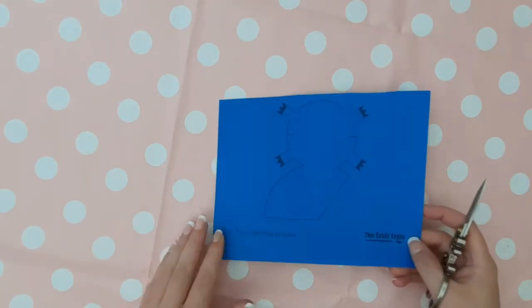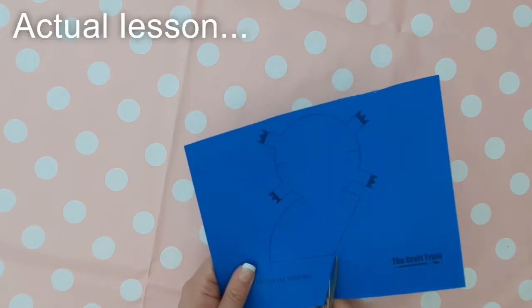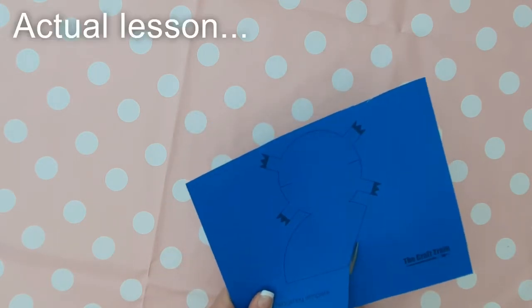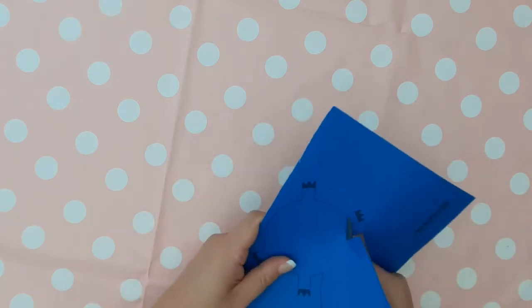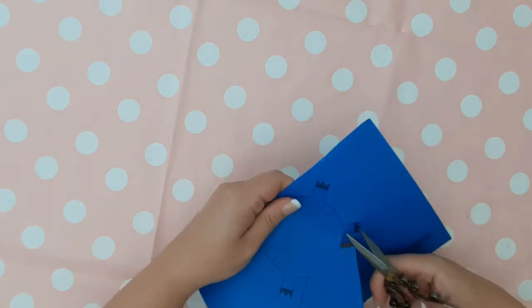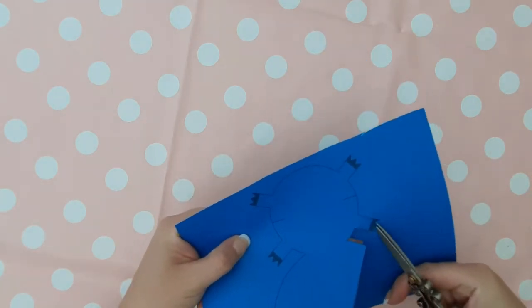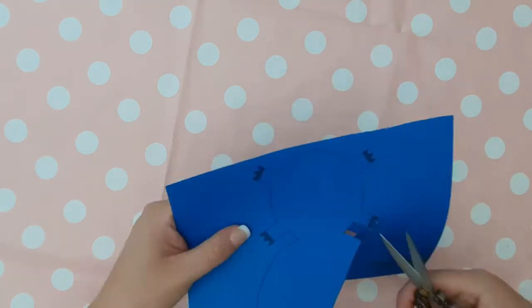For the actual lesson with the children, let them choose what color they want their hedgehog to be and cut around the hedgehog template on the card. It's important to be as accurate as possible because the feet are quite fiddly, so they might need some help with this.